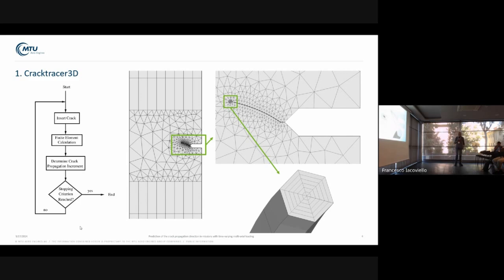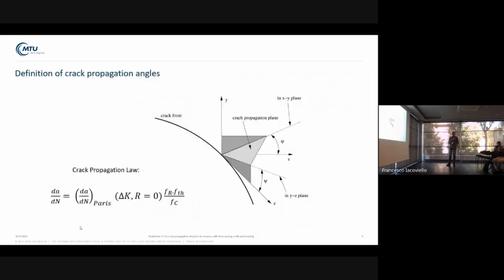Here you see the typical mesh with the focused hexahedral mesh. The crack propagation law is a standard law. Paris law modified with a term for the R influence, for the threshold, and for the critical range.